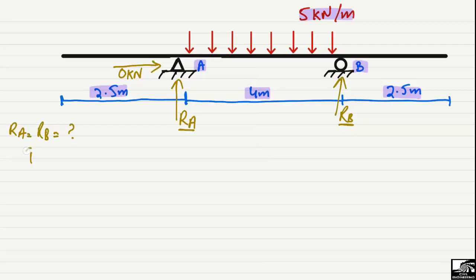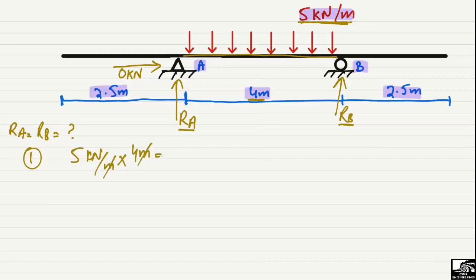The first method is simple and easy. There is a uniformly distributed load of 5 kN per meter acting only on the mid-span — the 4-meter span. The easiest approach is to convert this distributed load into a point load. 5 kN/m multiplied by 4 m gives 20 kN. So we transfer this distributed load into a point load of 20 kN, acting at the center of the 4-meter span — 2 meters from each end.